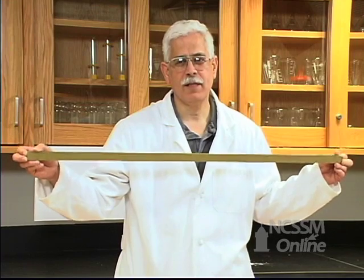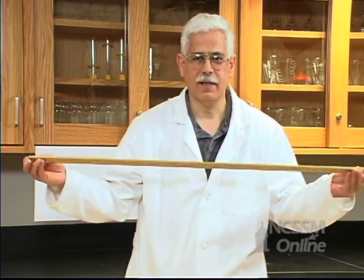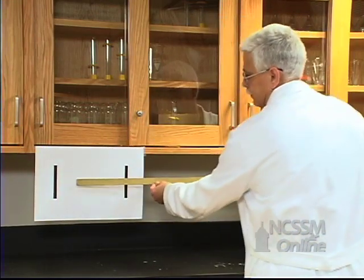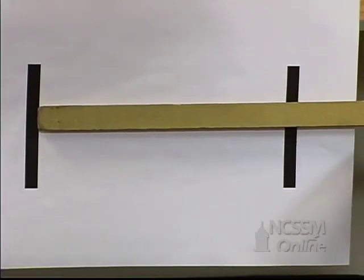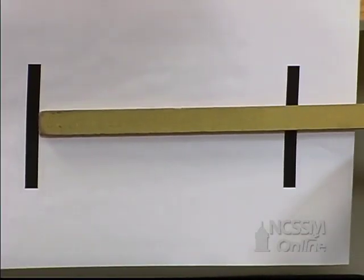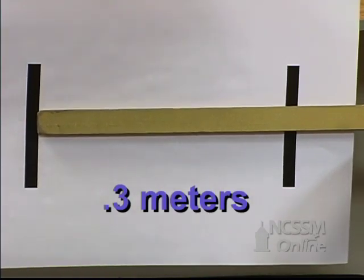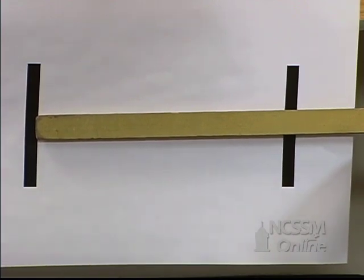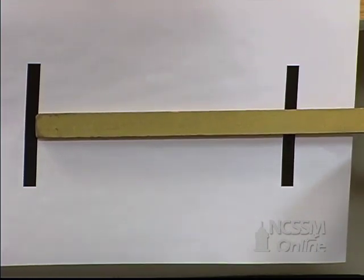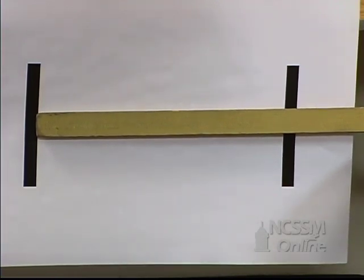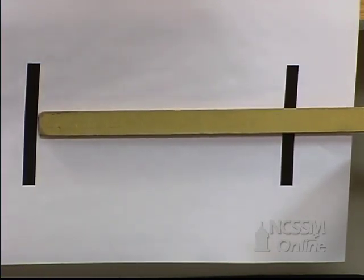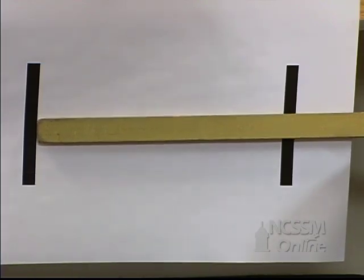We're going to measure the distance between two lines with this meter stick. We'll estimate this distance to be about 0.3 meters. That is one significant figure and it's an estimated figure. The actual length might be 0.2 meters or it might be 0.4 meters, but our best estimate is 0.3 meters. We have one significant figure.